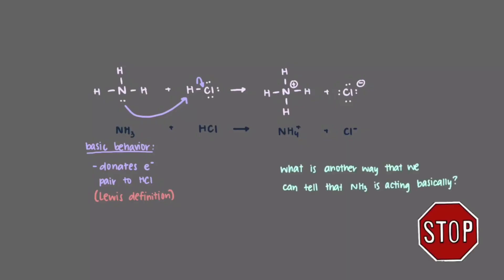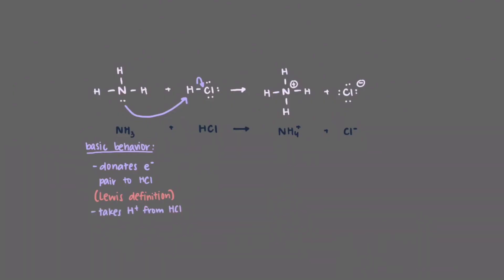What is another way that we can tell that ammonia is acting basically? Ammonia takes the proton from hydrogen chloride, which makes it a base. This is another definition of basic behavior, the Bronsted-Lowry definition.